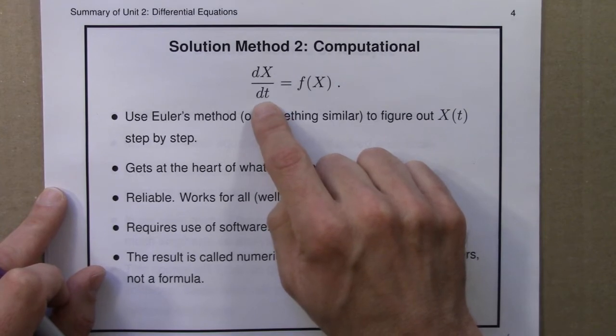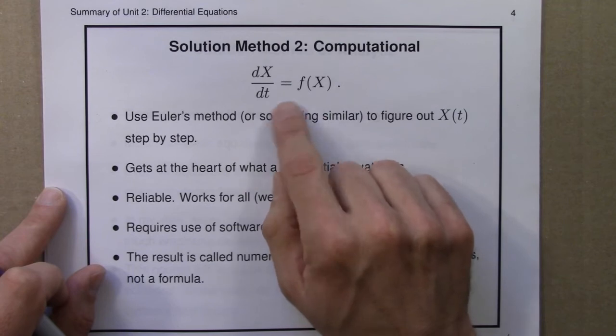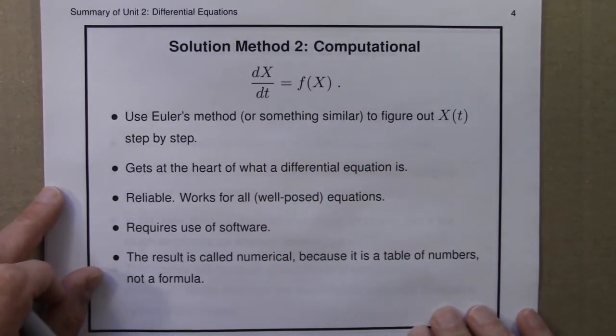The derivative we can use to figure out the x value a little later, and so on. And so we're constantly swapping back and forth between these two sides of the equation. I think Euler's method gets at the heart of what a differential equation is - a rule specifying how a quantity changes.